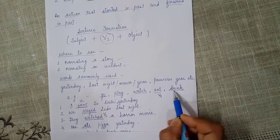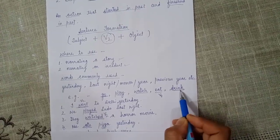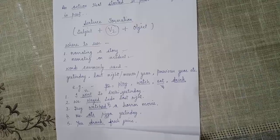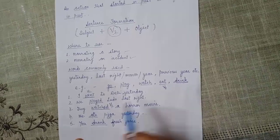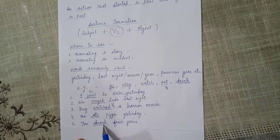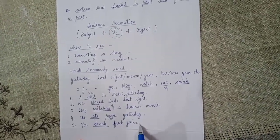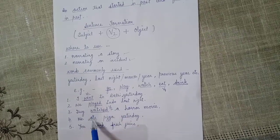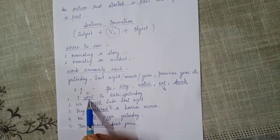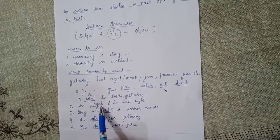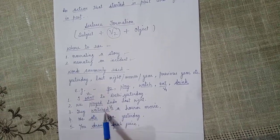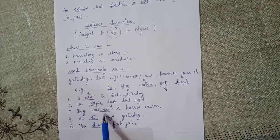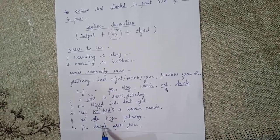The last verb I have taken is drink, and its second form is drank. For example: You drank fresh juice. So all these verbs — went, played, watched, ate, drank — are all past forms of their respective verbs.